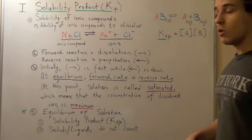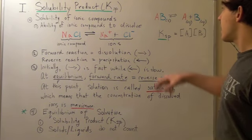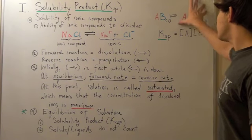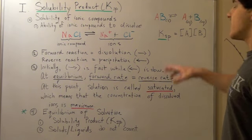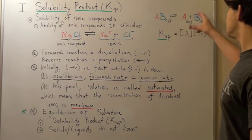when we determine Ksp, the solubility product constant, we only count these aqueous ions. So Ksp equals the concentration of A times the concentration of B.